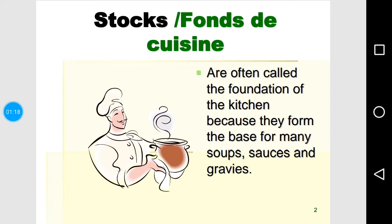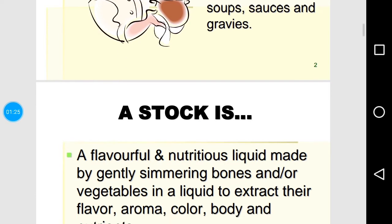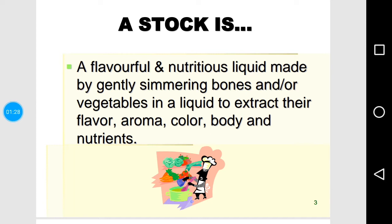Stocks are called the foundation of the kitchen because they form the base for many soups, sauces, and gravies. A stock is a flavorful and nutritious liquid made by gently simmering bones and vegetables — or just vegetables in the case of a vegetarian stock. For a non-vegetarian stock, animal bones are also added and simmered in water to extract flavor, aroma, color, body, and nutrients.